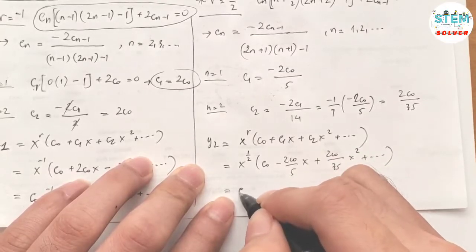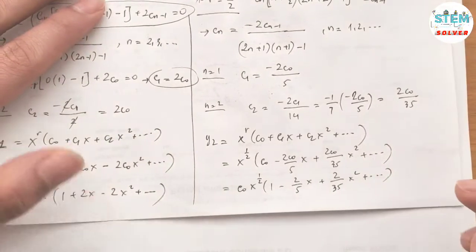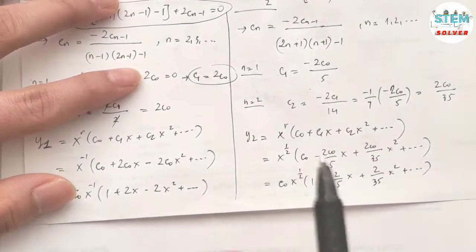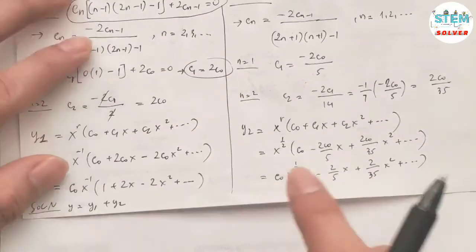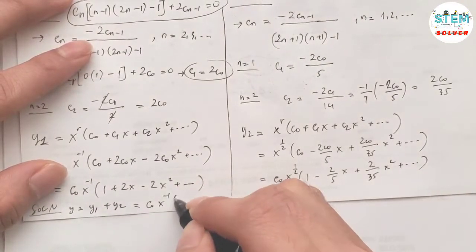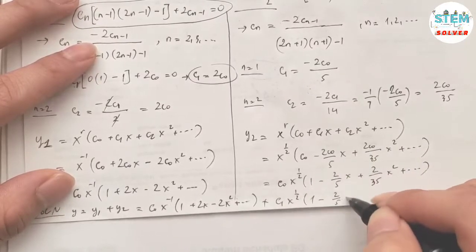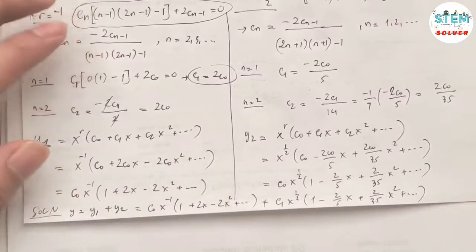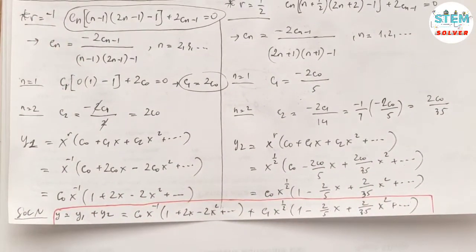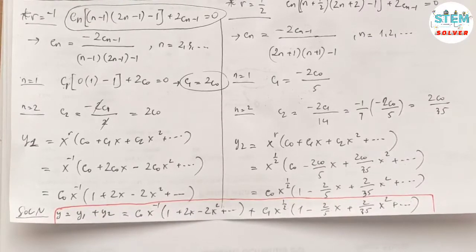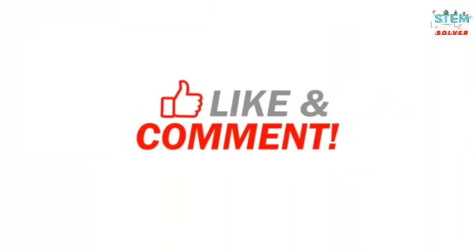The final solution is y = y₁ + y₂. Rewriting: y = c₀ x⁻¹(1 + 2x − 2x² + …) + c₁ x^(1/2)(1 − (2/5)x + (2/35)x² + …), where the two arbitrary constants c₀ are not the same. If you find the video helpful, feel free to like, share, and subscribe to the channel, and hit the bell so you won't miss anything.